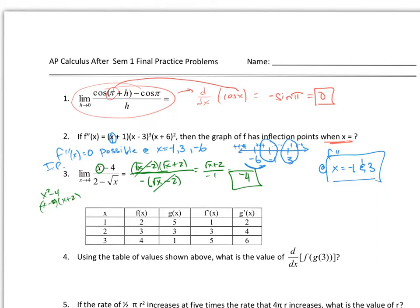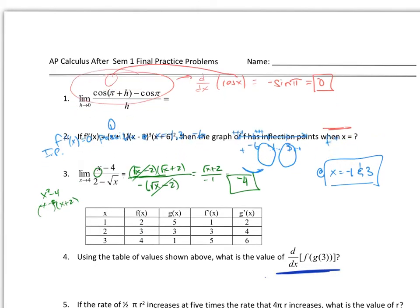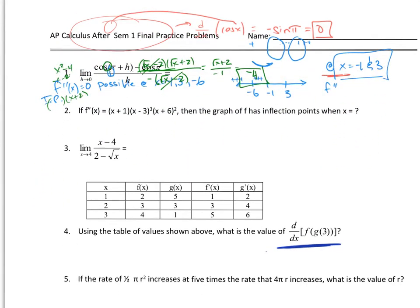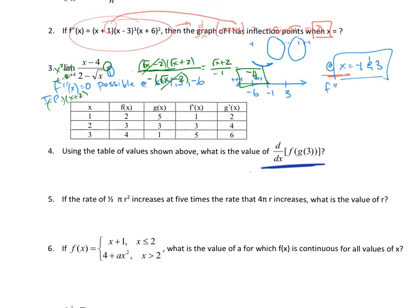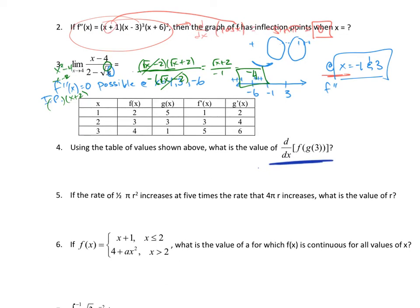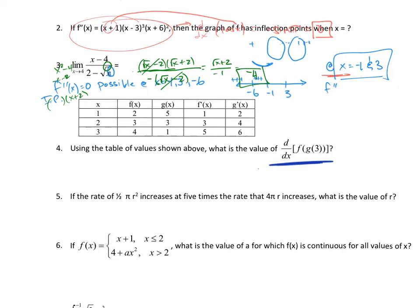Moving on to number 4. It says, using the table value shown above, what is the value of this? We are looking to take the derivative with respect to x of f of g of 3. Let's think of it like this. Sorry about that, we'll just move it up like this. Sometimes the software doesn't behave properly.